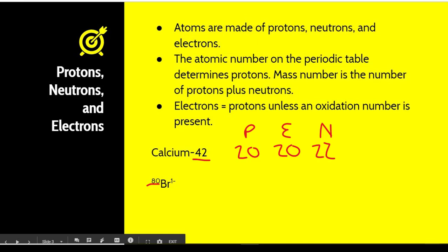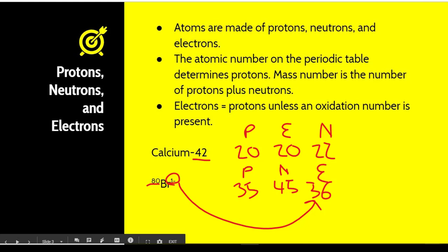Next is bromine. Bromine has an atomic number of 35, so it is going to have 35 protons. The mass number is 80, so we are going to have 45 neutrons. With electrons, notice that we have a charge associated with it — it is a minus one. That indicates we have one more electron than protons, so that gives you 36. When you see a charge, you have to apply that to the number of electrons, because changing the number of protons would actually change the element.